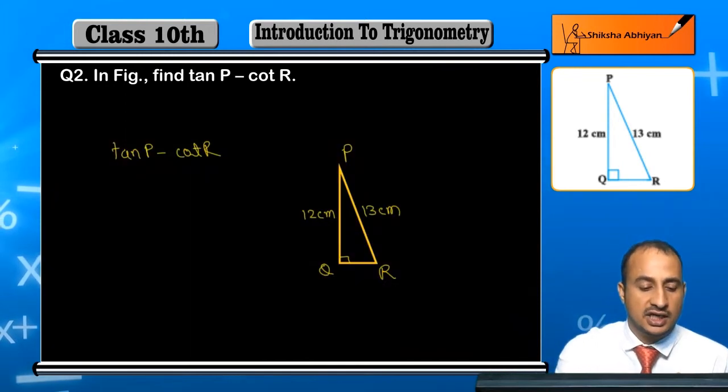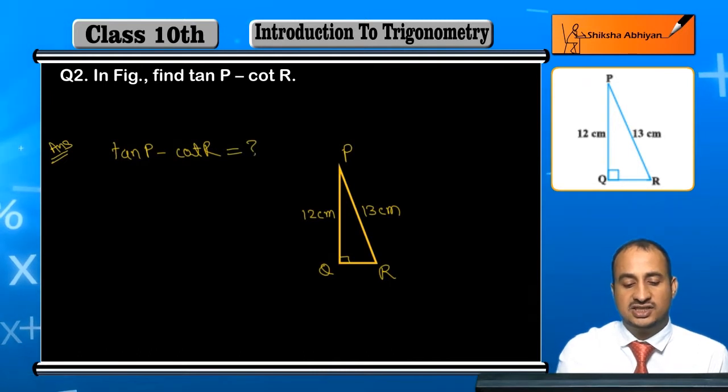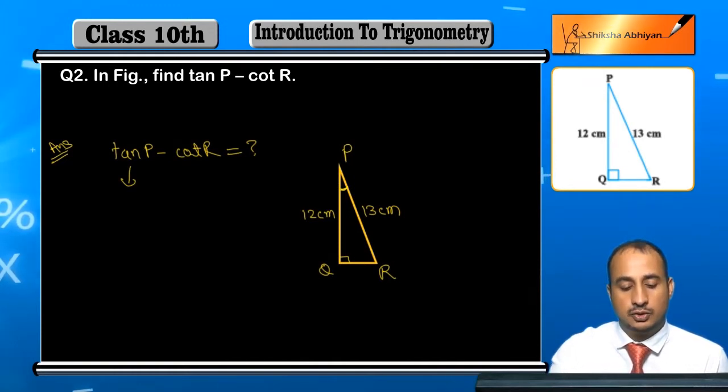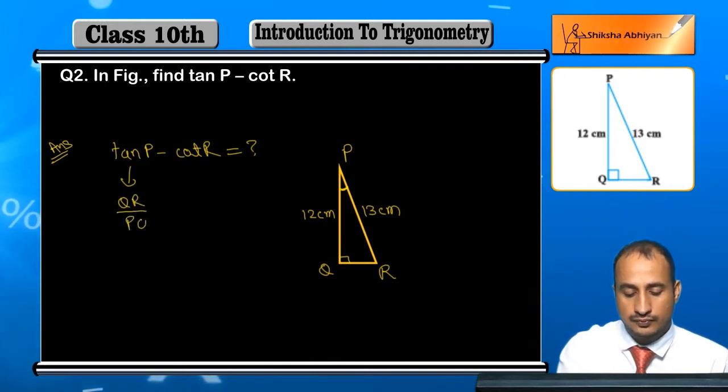Students, I have already drawn the triangle here. You need this value. For this, tan P - what will tan P be? When we talk about P, the side opposite to P will be QR. This will be the perpendicular. So tan P will be QR upon PQ. Your base will be PQ.